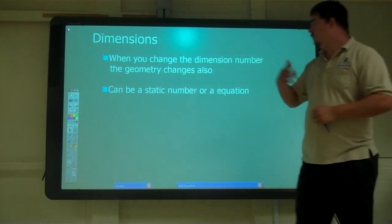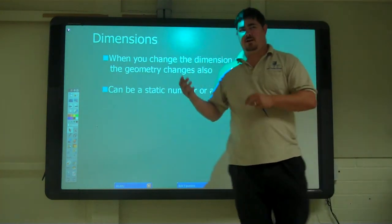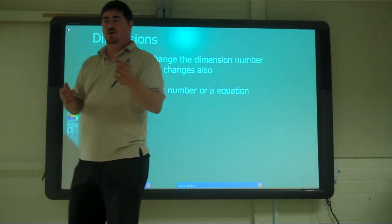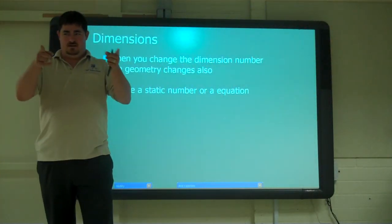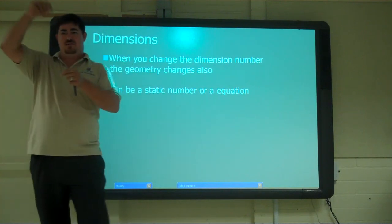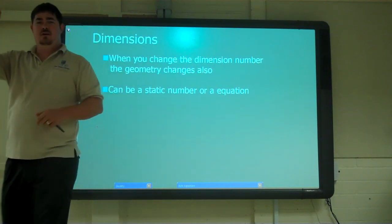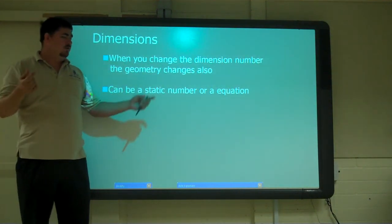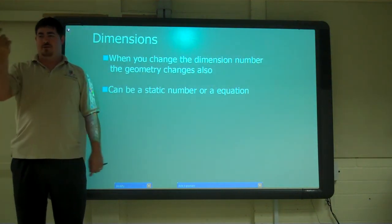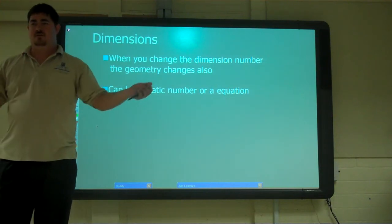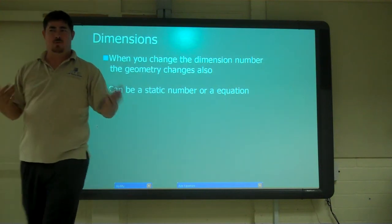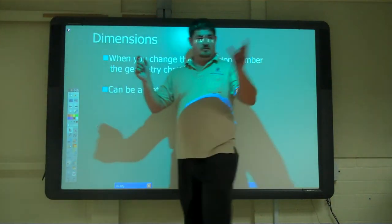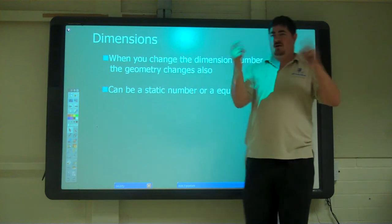So unlike AutoCAD, where you draw it exact and the dimension just reads whatever the line is — with parametrics, you change the number on the dimension and it changes the geometry. That's what makes it more powerful: the number controls geometry, not the other way around.